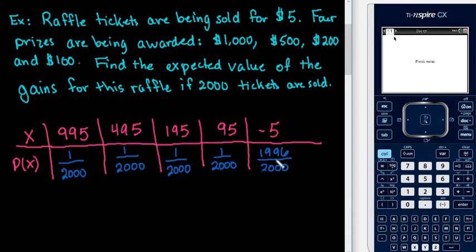I already have a probability distribution set up for you. Just so that you understand where some of these numbers came from, the $1,000 is the prize. Well, we paid $5 to get that, so we gained $995. Since we're talking about the gains, we're looking at how much extra money we actually walked away with. Even though we won $1,000, we paid $5 to play it, so we're really only walking away with $995.